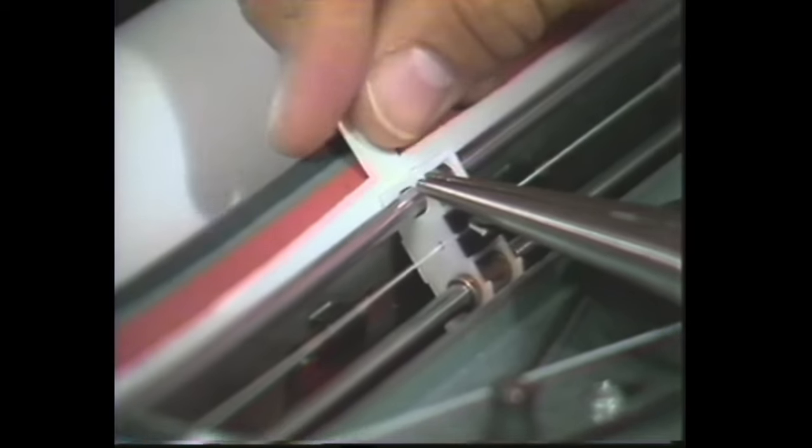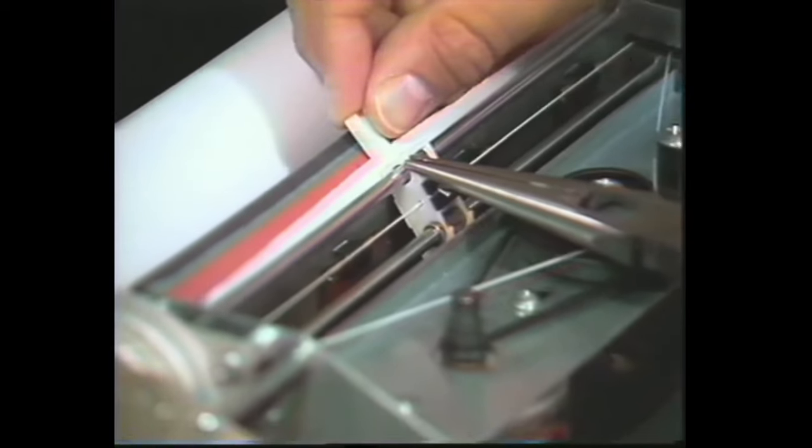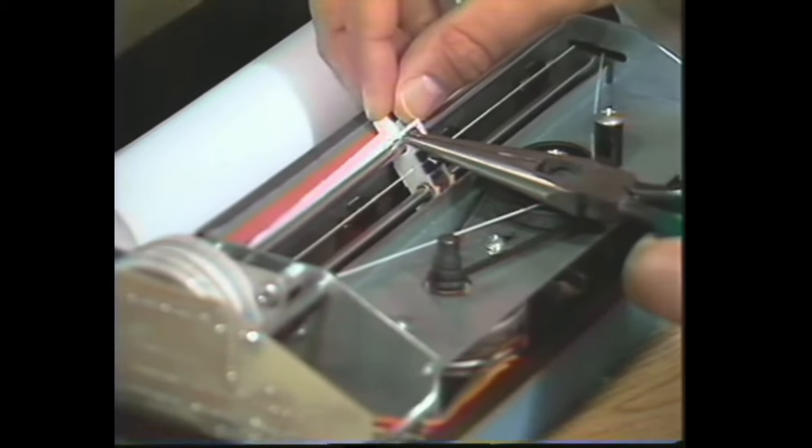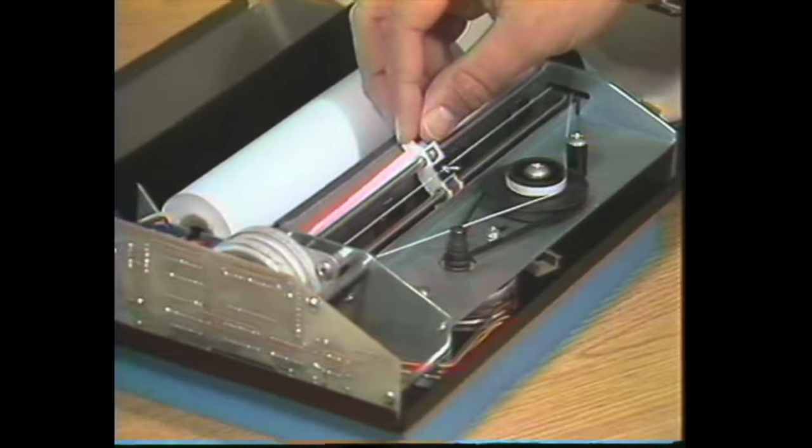Okay, with our needle nose pliers, we'll gently pull the carrier back and very gently insert the print head. Push it down carefully into the carrier until it's seated against the little plastic stop on the inside.